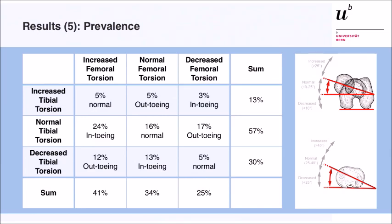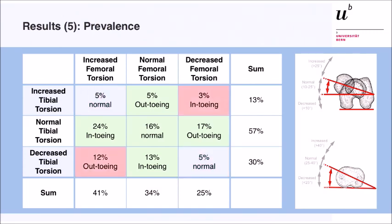On the top you can see femoral torsion; on the left, tibial torsion. The classic interpretation: normal tibial torsion with increased femoral torsion results in in-toeing; decreased femoral torsion results in out-toeing — present in almost half of patients. You can also have pathological tibial torsion with normal femoral version. The compensatory combination — where both femoral and tibial torsion compensate each other — was observed in 10% of patients. There is also a worsening effect: decreased femoral torsion combined with in-toeing. If you perform a derotation in those cases, there is a high probability of worsening the in-toeing and potentially causing problems.